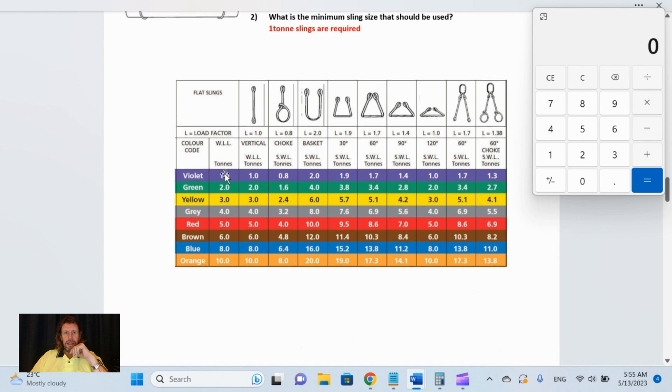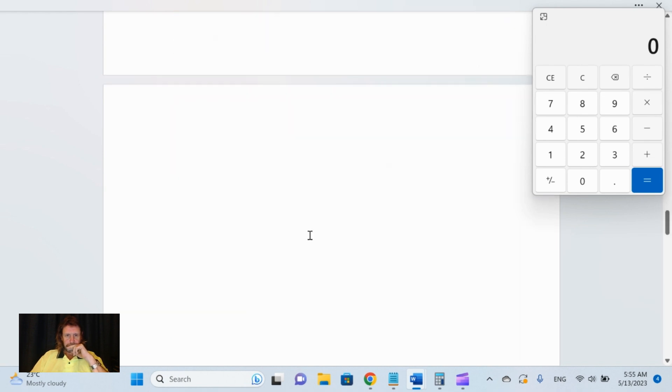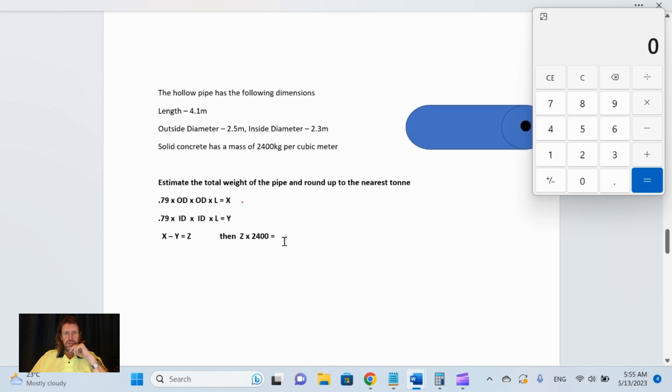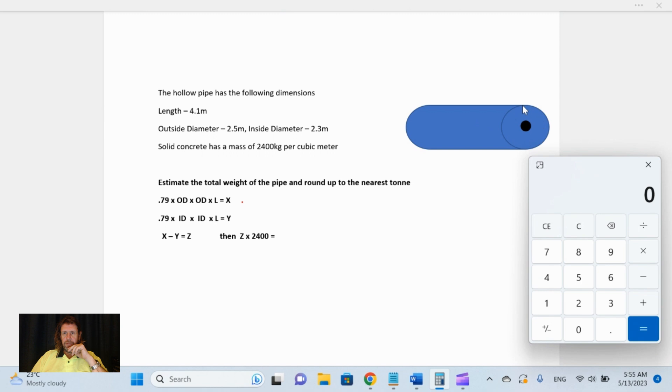Next we've got a hollow pipe with the following dimensions. The equation is laid out here for us. How do we work this out? We've got a hollow pipe, we need to find out the weight of that. Estimate the total weight of the pipe and round up to the nearest ton.